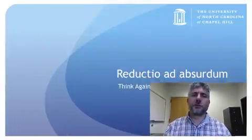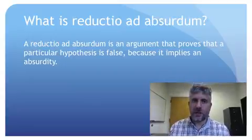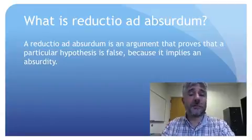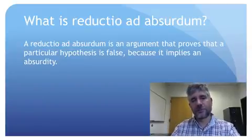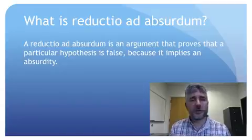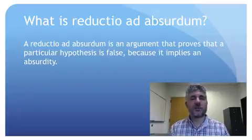Today we're going to talk about a kind of refutation that we call a reductio ad absurdum. Reductio ad absurdum is a Latin phrase that means 'reduce to absurdity.' It's a refutation of an argument that focuses on a particular claim — either one of the premises or the conclusion — and shows that that claim implies some absurdity. And since it implies some absurdity, the claim itself has to be false, because nothing that's true can imply something that's obviously false.